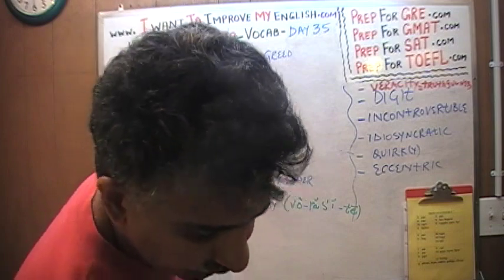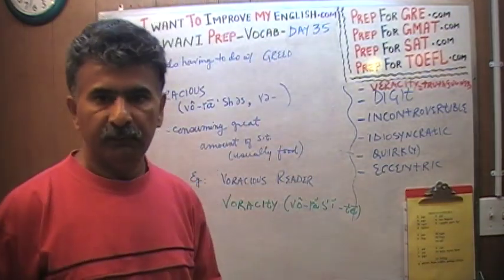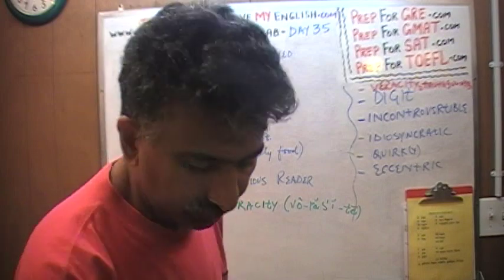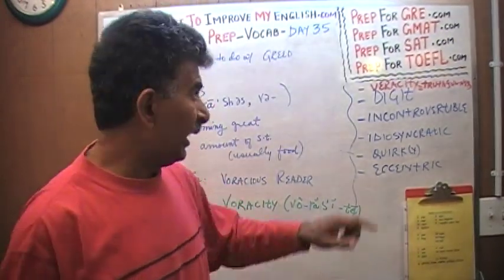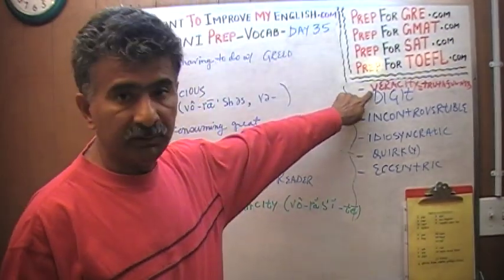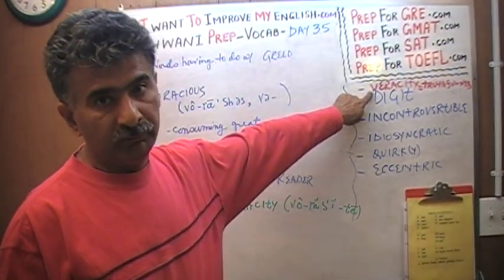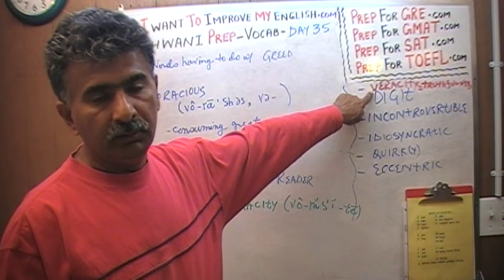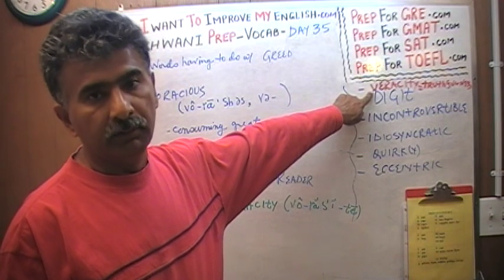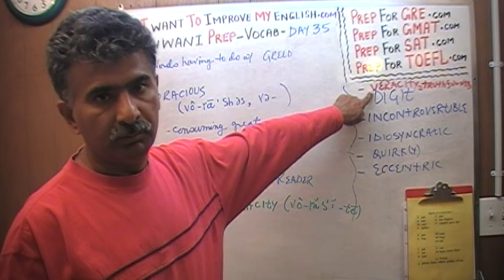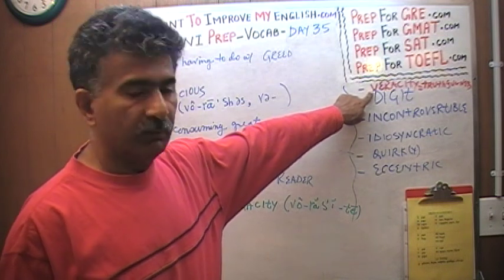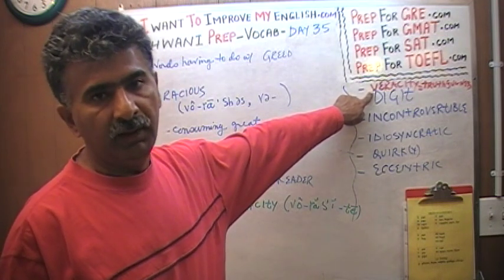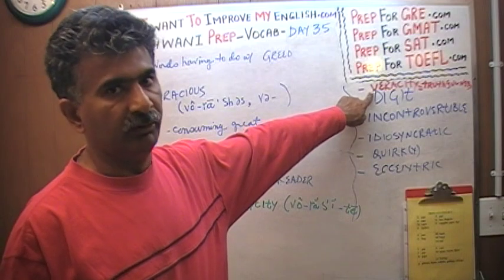For example, if you say something to somebody, a person might say, 'I doubt the veracity of that statement.' If you are doubting the veracity of the statement, you are doubting the truthfulness of the statement — in other words, you are telling the person that you don't believe they are telling the truth. Instead of saying 'I believe you are telling me a lie,' you can say 'I doubt the veracity of this statement.'